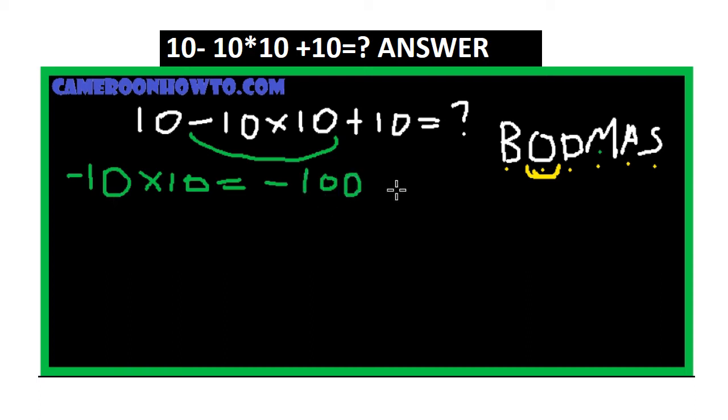Then the second thing to do is to rearrange the question again. So we have 10 minus 100 plus 10 equals what?